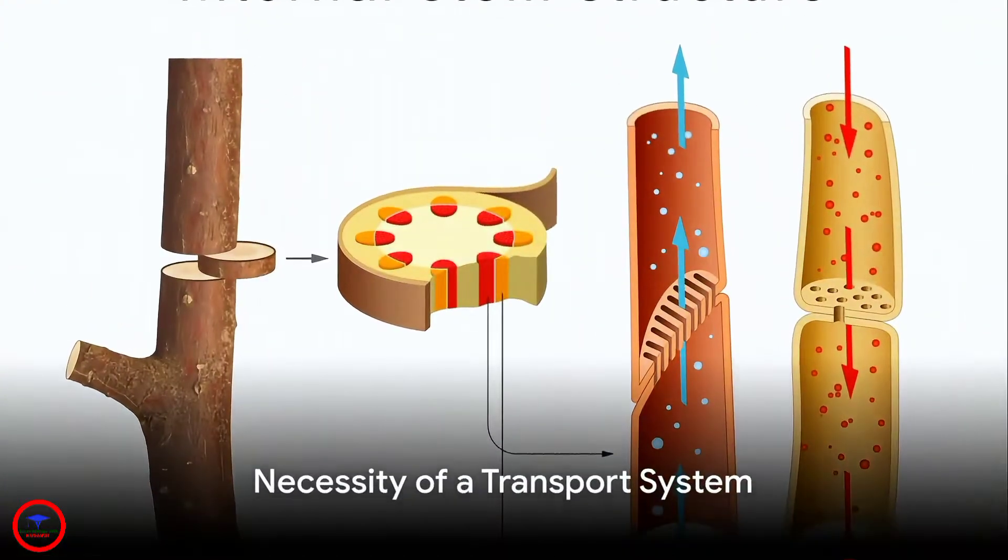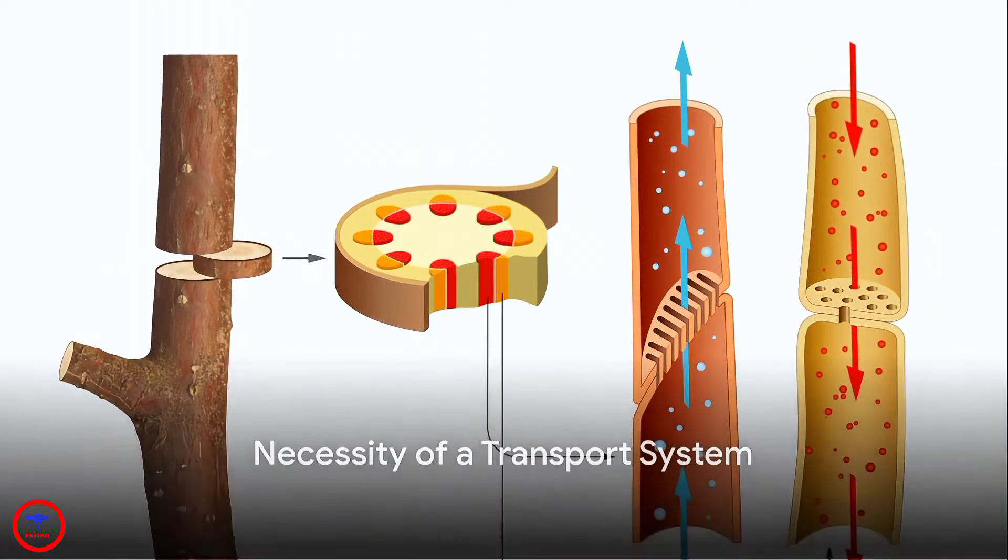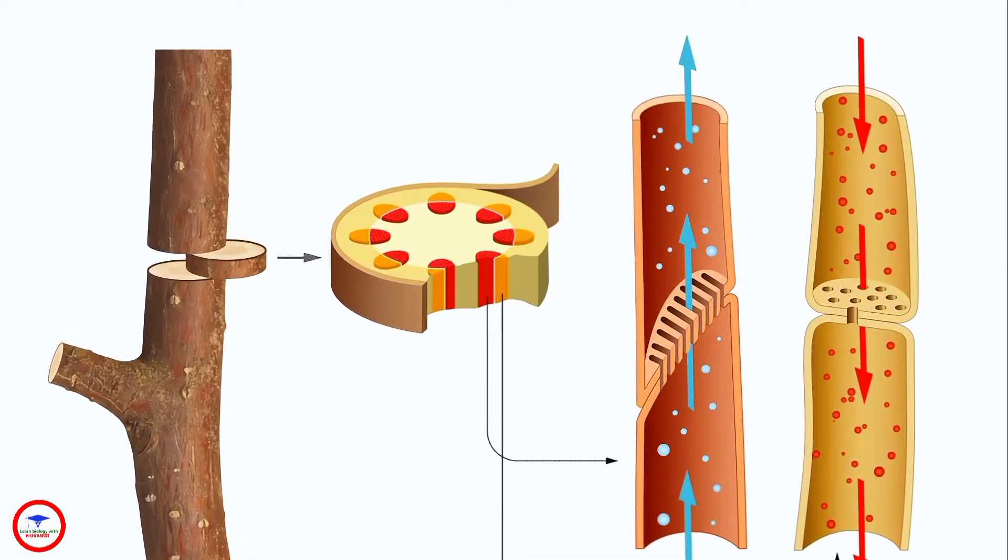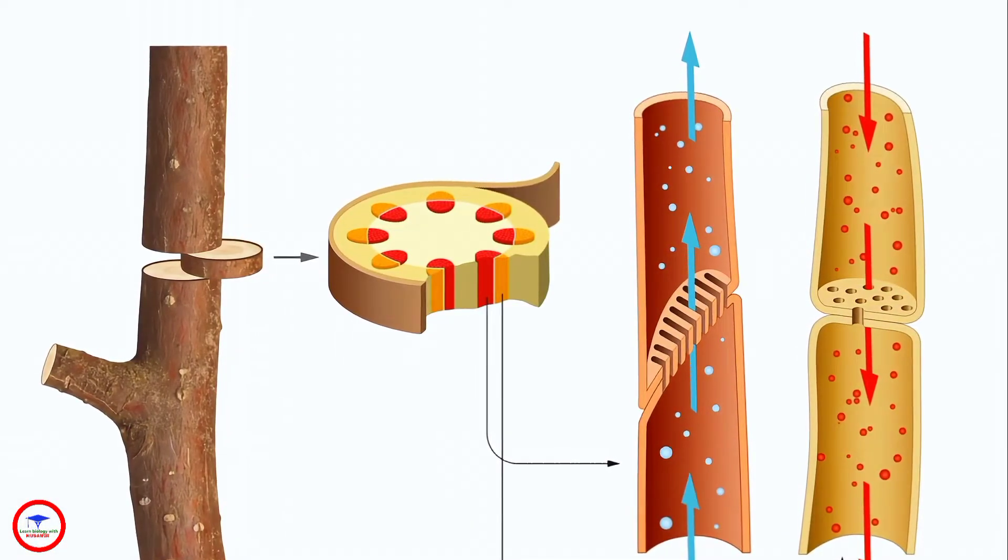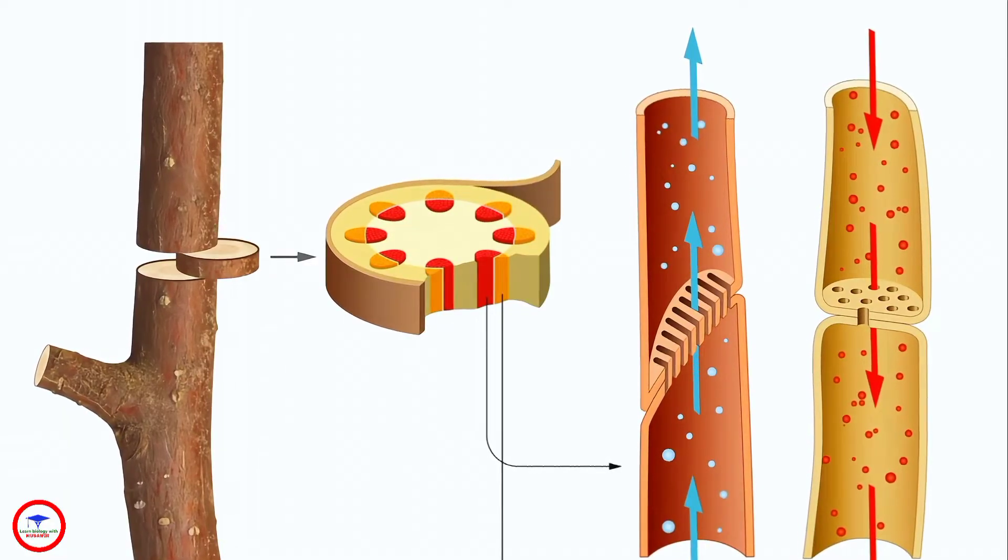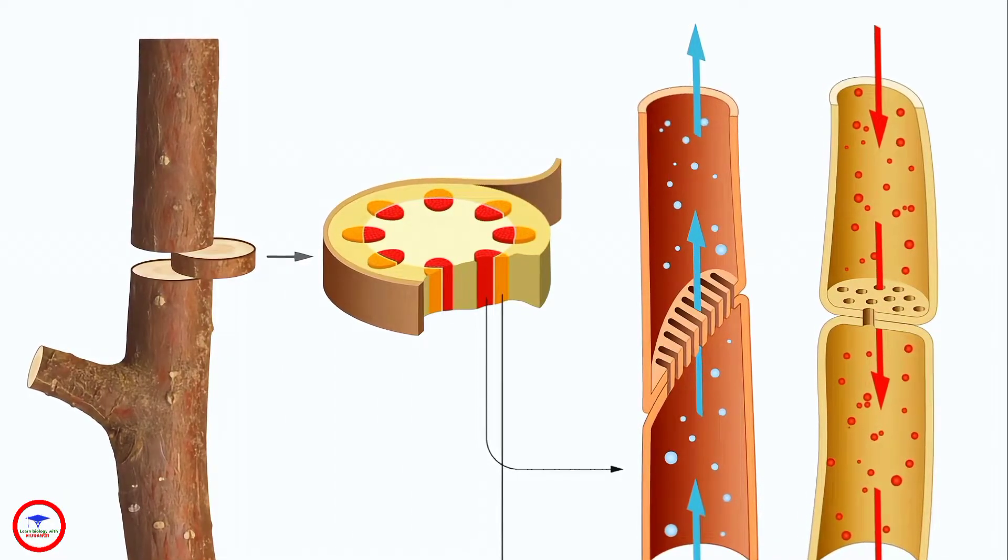First, we need to understand why a transport system is necessary for plants. Being multicellular organisms, the much-needed water and food nutrients wouldn't get far without a transport system.